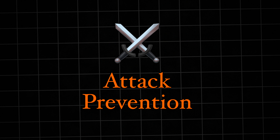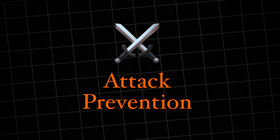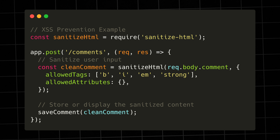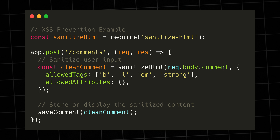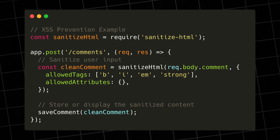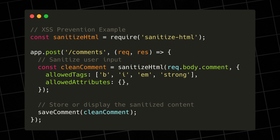Now on to our third pillar: attack prevention. This is where we protect against common web vulnerabilities like cross-site scripting, SQL injection, and cross-site request forgery. Let's start with cross-site scripting, or XSS. This occurs when attackers inject malicious scripts into your web pages. Always sanitize user input before displaying it. Use established libraries like sanitize-html, and never directly insert user input into your HTML. Also implement content security policy headers to add an extra layer of protection.